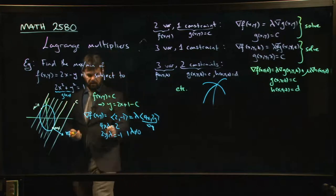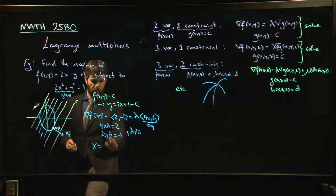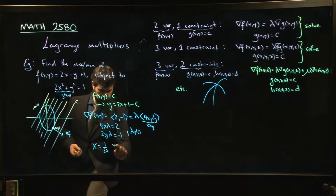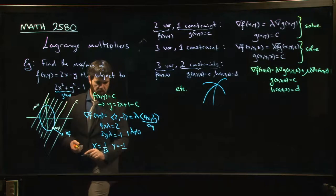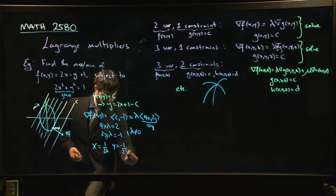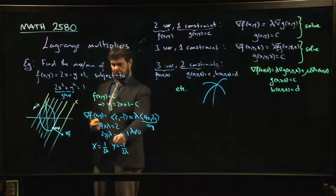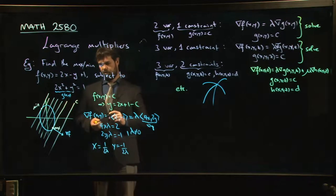So I could do things like this. I could say that x is 2 over 4 lambda, so 1 over 2 lambda. I could say that y is minus 1 over 2 lambda. And I can plug those in. So where do I plug them in? I can plug them into this constraint equation.